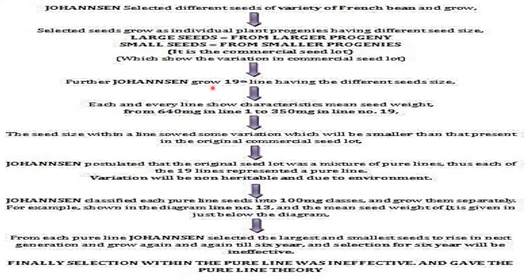Johannsen grew 19 lines having different seed lots. He took large seeds from a larger progeny and small seeds from a smaller progeny. Each and every line showed a characteristic mean seed weight. For example, the starting line had a seed weight of 640 mg.